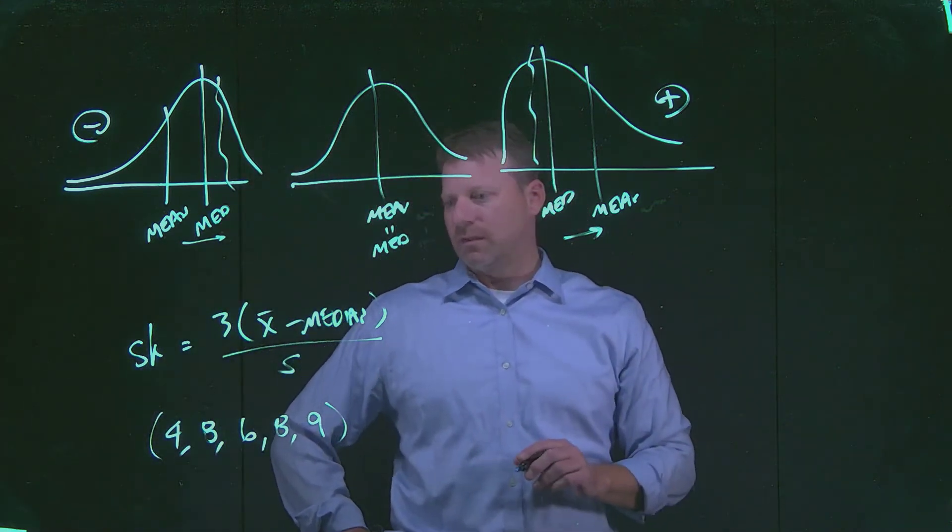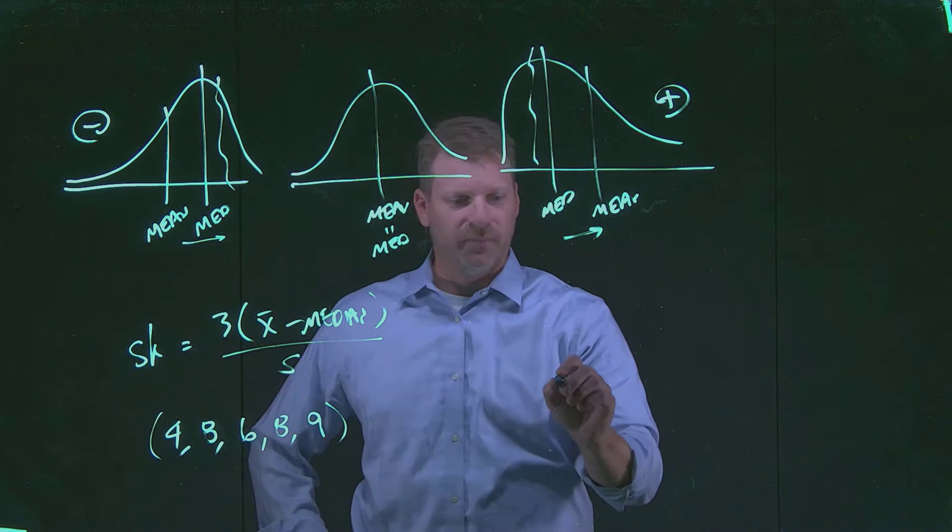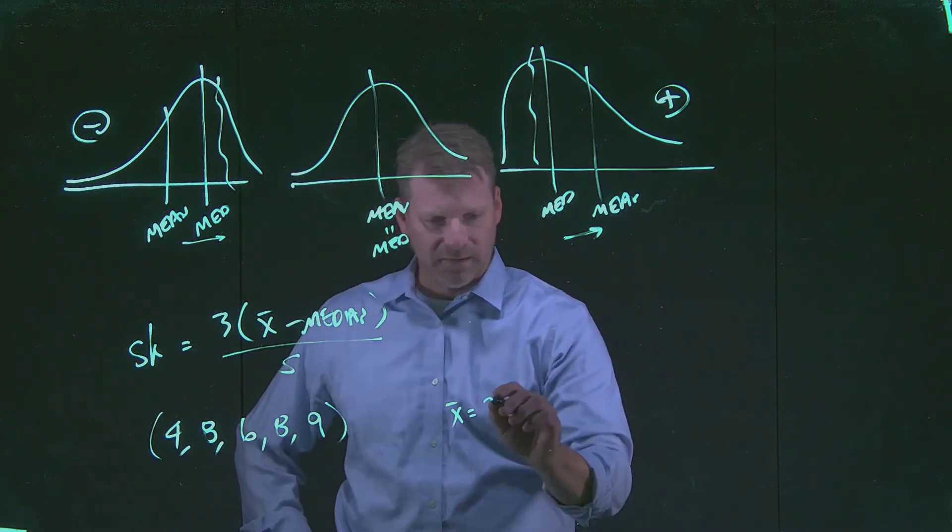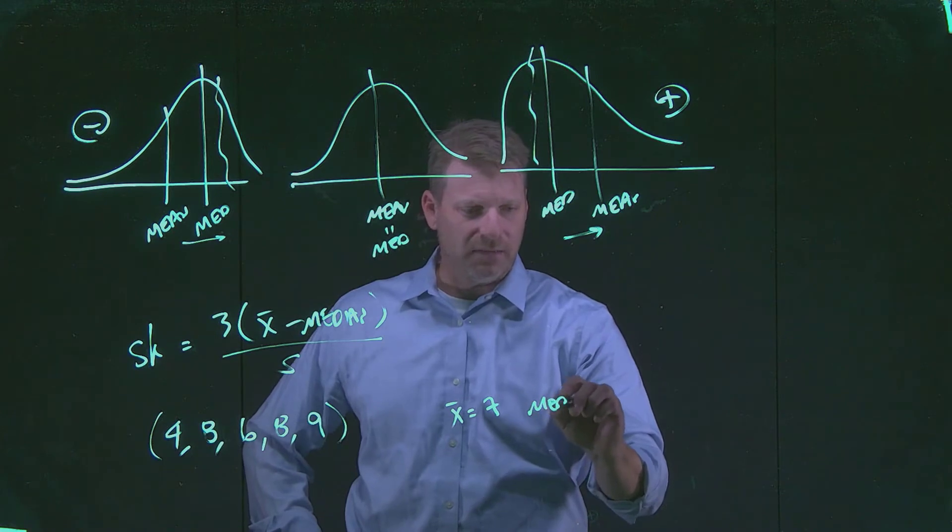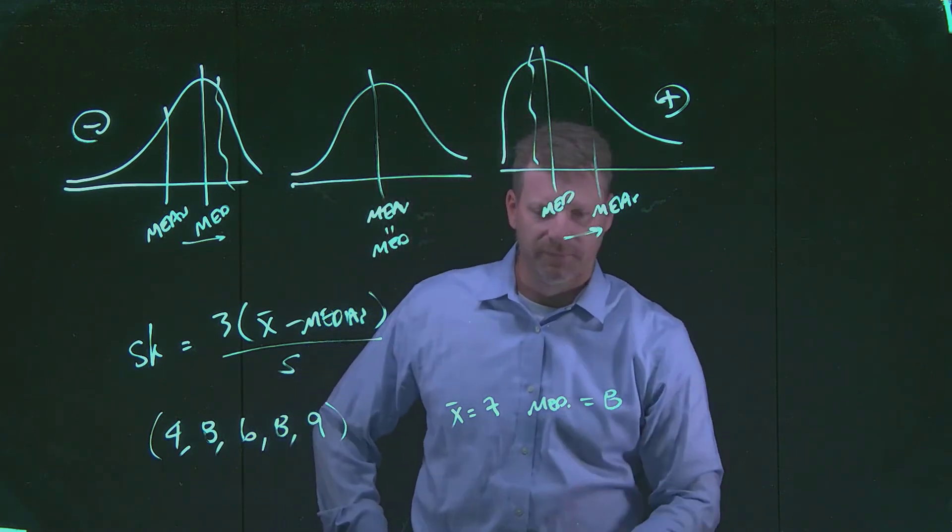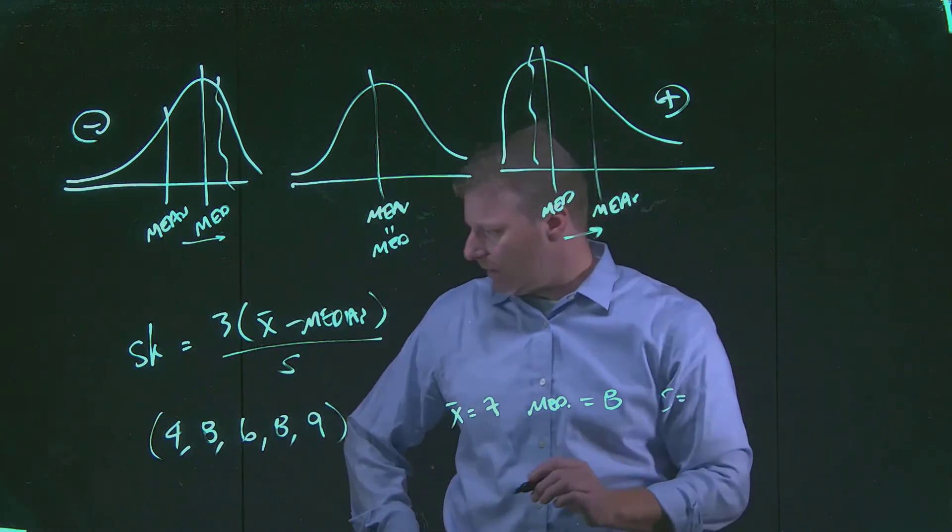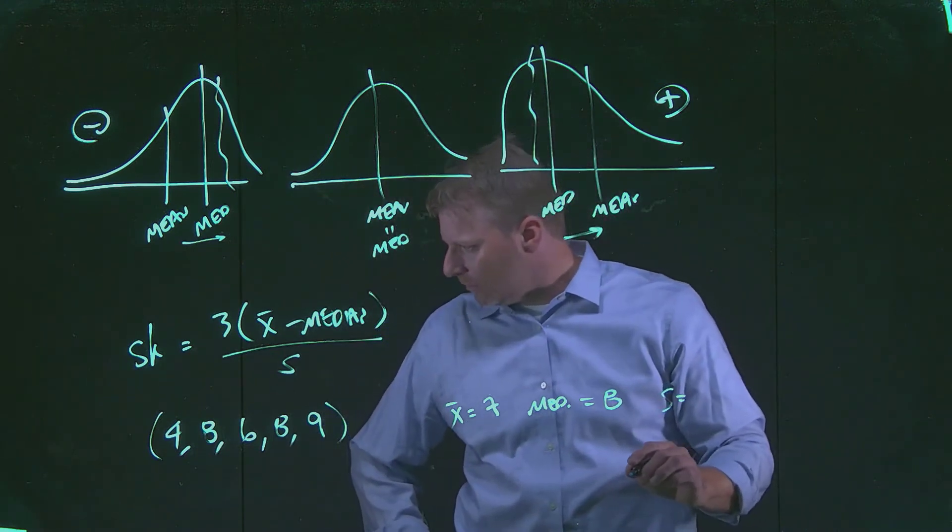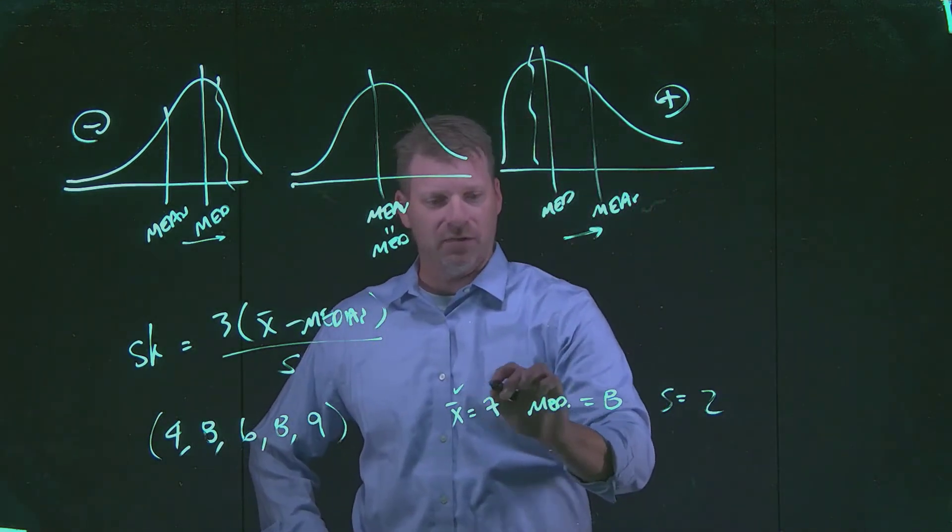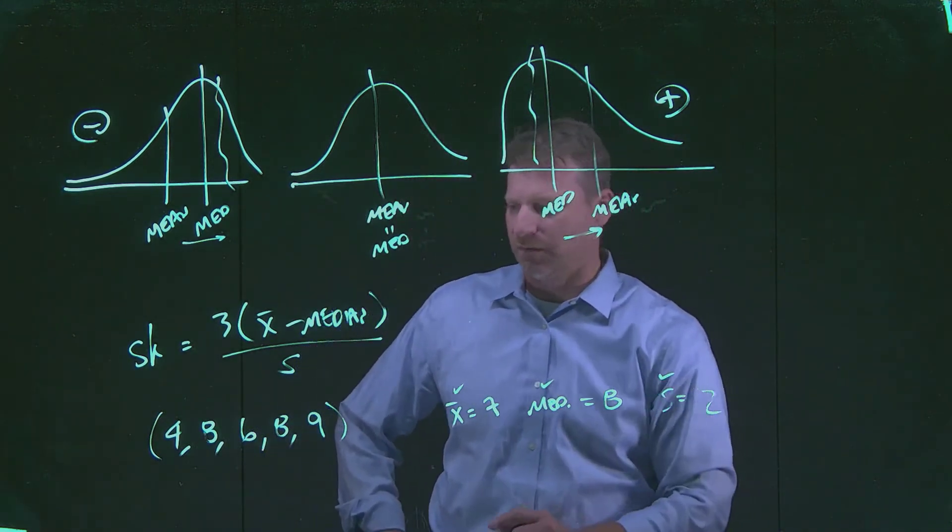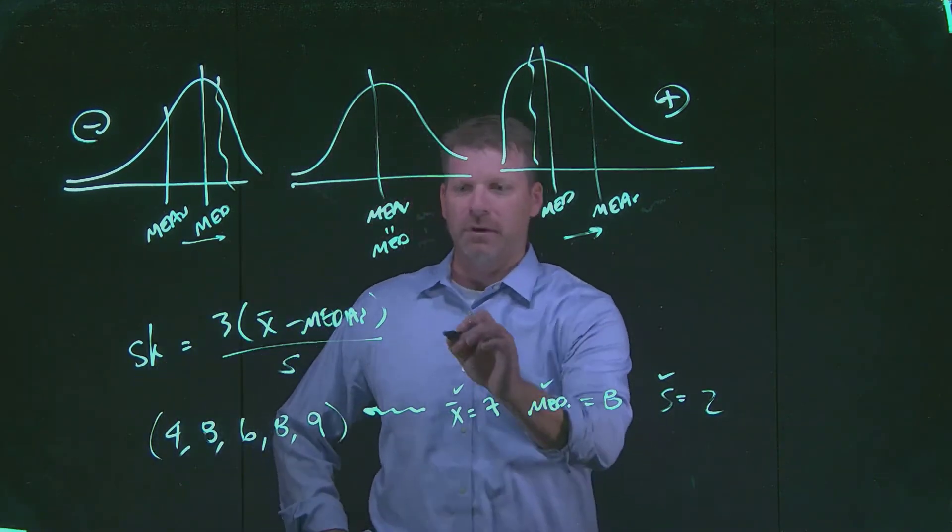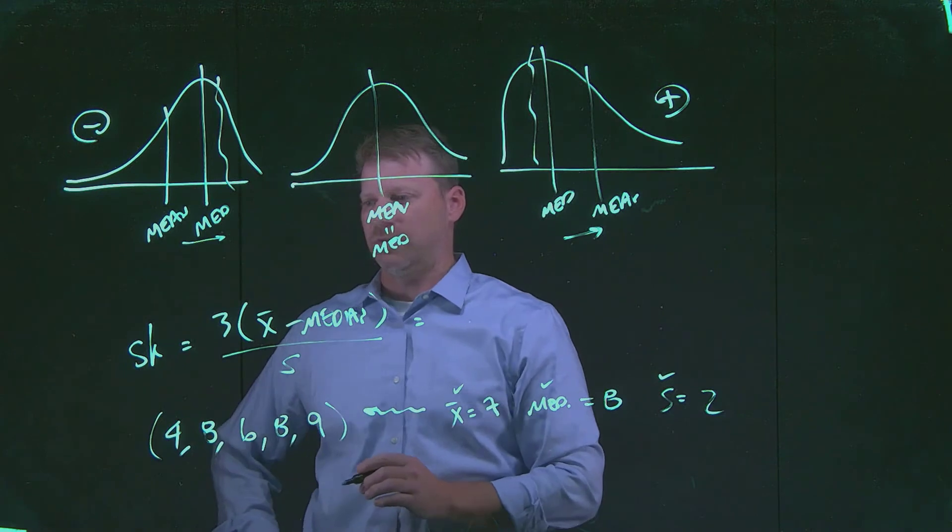I'm not going to walk us all the way back through it, but I'm going to summarize this and say the X bar for this set of data ends up being 7. Our median for this set of data ends up being 8, and our standard deviation is 2. We're familiar with how to calculate each one of these measures.